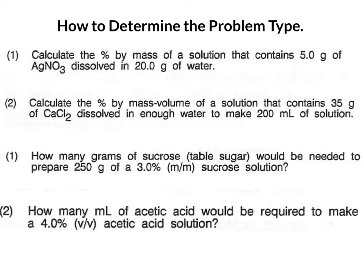Before we can start solving a problem, we need to figure out what type of problem we have. First, we determine if it's a percent problem, a molarity problem, or one of the other sets. Second, we find out if this is a find it or a use it. And third, once we know it's a percent problem, we decide what type of percent: by mass, by volume, or percent by mass volume.